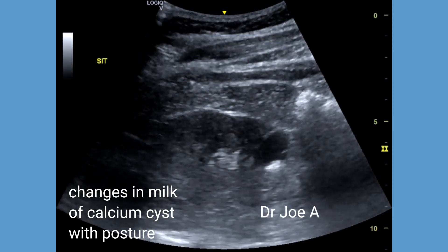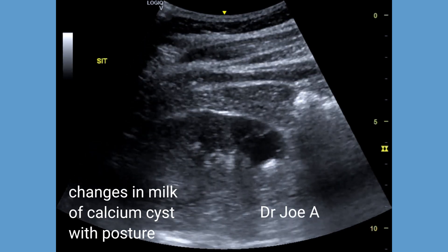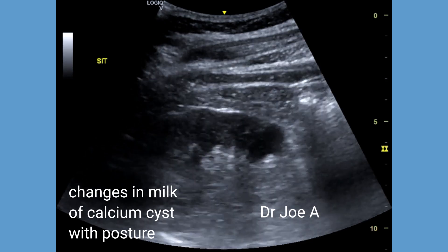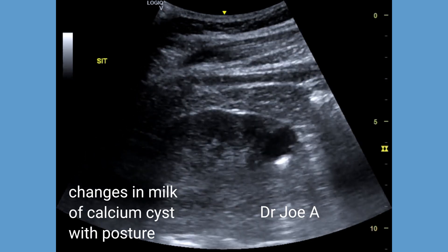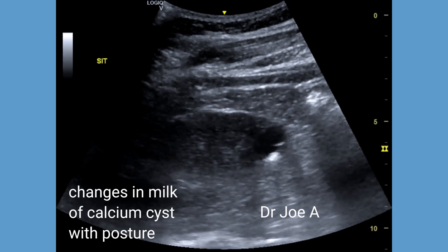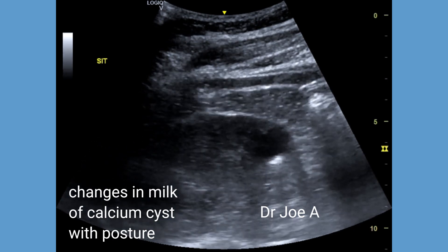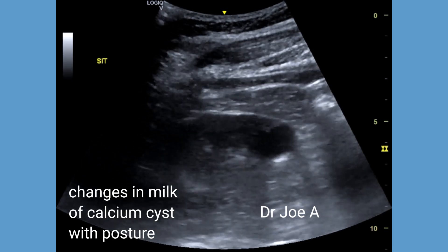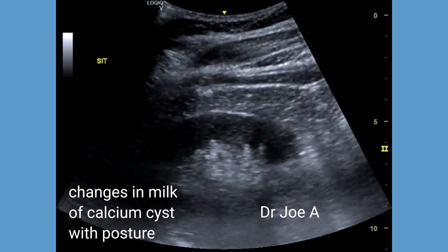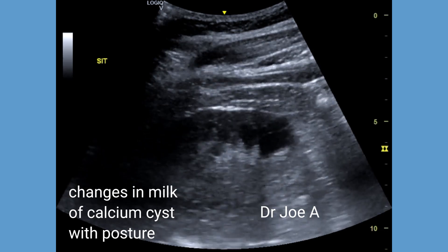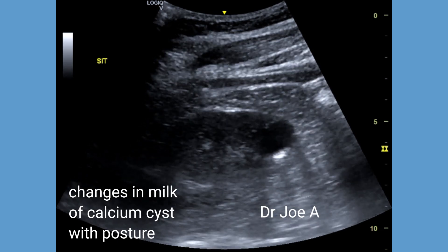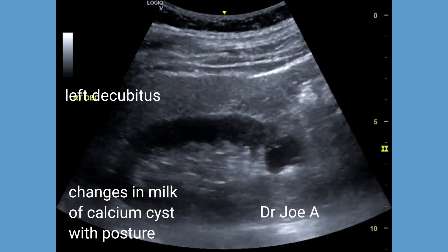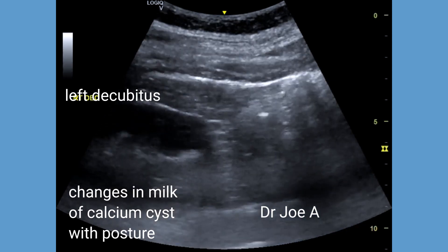A milk of calcium cyst must be distinguished from a renal calculus. The changes in the characteristic of the milk of calcium crystals suspended in the cyst with changes in posture is one of the main differentiating features from a renal calculus on ultrasound.